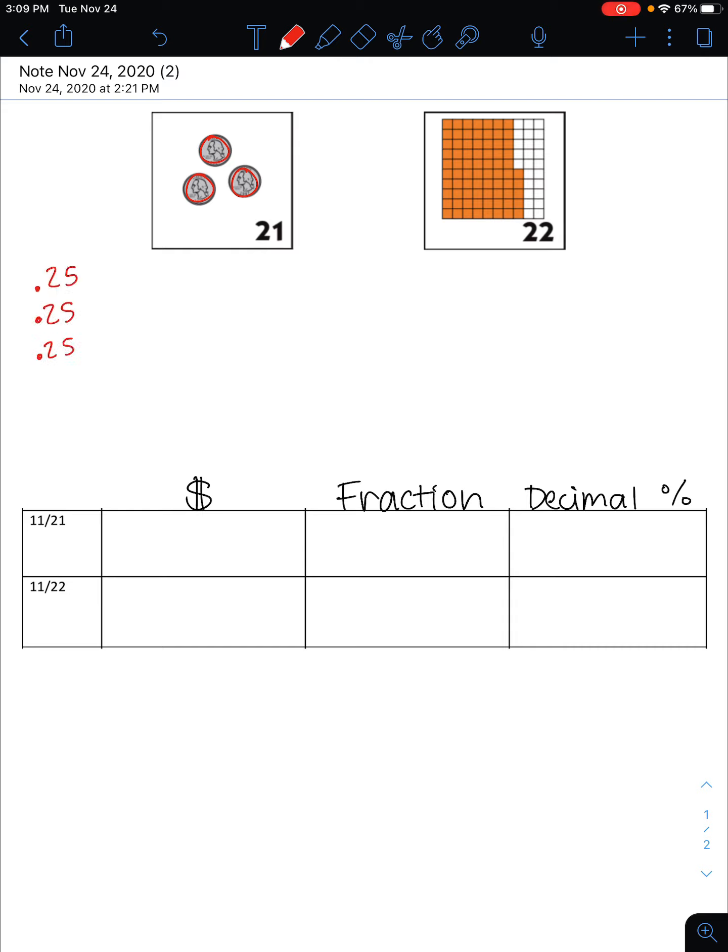And if I add those three quarters together, I get, bring the decimal down, 75 cents. This gives me my money format for this value: zero dollars and 75 cents.